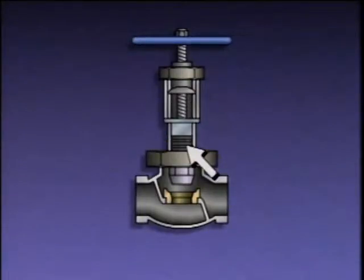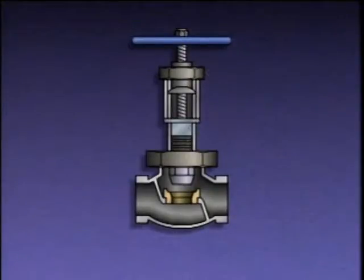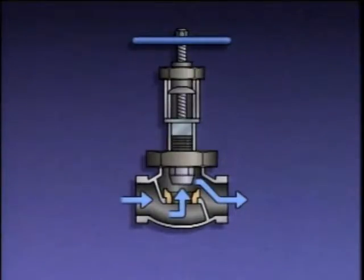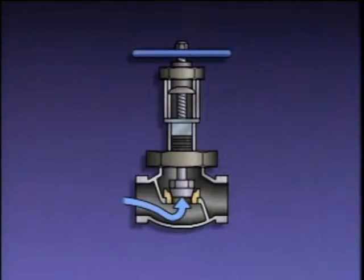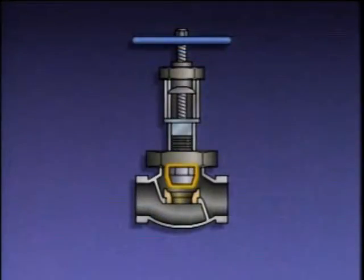A globe valve also has a stuffing box, packing, and a packing gland with a gland nut. Fluid flow enters a globe valve at one port and exits at another, making several right-angled turns as it passes through. Globe valves are normally arranged so that the higher-pressure side of the piping system acts under the disc, making it easier for an operator to open the valve. As a globe valve is opened, the entire disc and seat are exposed to fluid flow.